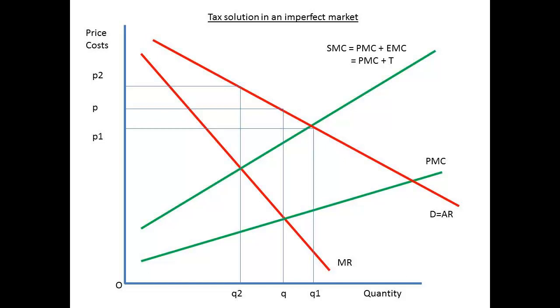What happens when there is only one major supplier? In other words, does this idea work with a monopoly?